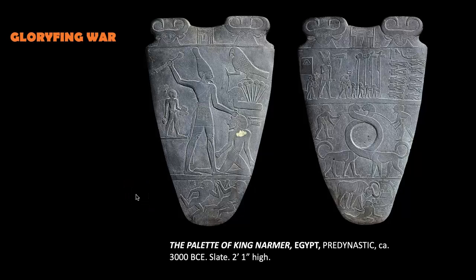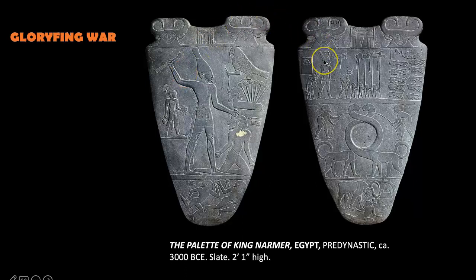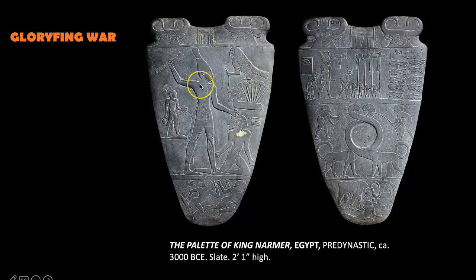On the side on the left that we're looking at, he's wearing the bowling-pin-shaped crown of Upper Egypt, but on the right — the back of the palette — he's wearing a different crown style that represents Lower Egypt. The fact that he is sporting both crowns shows that he's the king of both Upper and Lower Egypt.